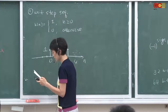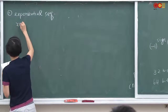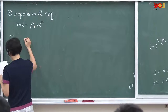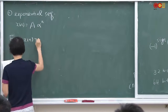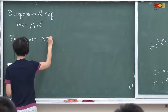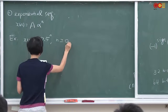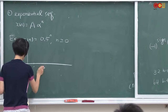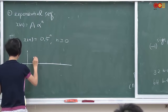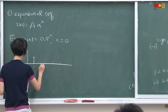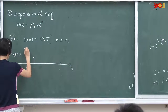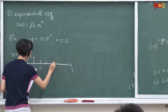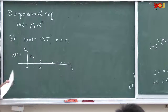We also have the exponential sequence: x(n) of the form a·alpha^n. For example, x(n) = 0.5^n for n greater or equal to 0. The picture would be: at n=0 it's 1, at n=1 it's one-half, at n=2 it's one-quarter, then one-eighth, one-sixteenth, and so on. That's an exponential sequence.